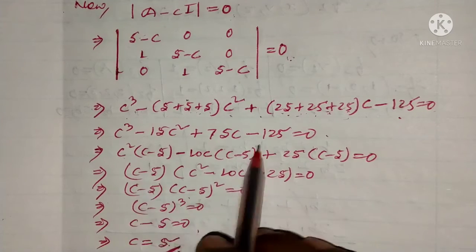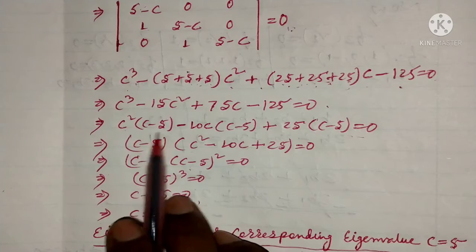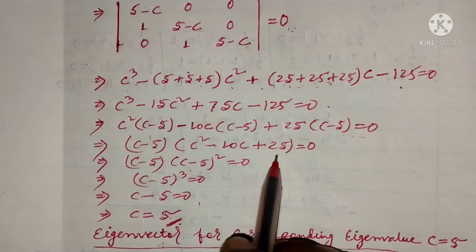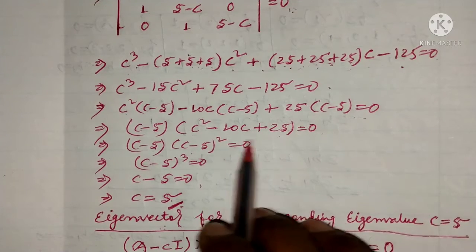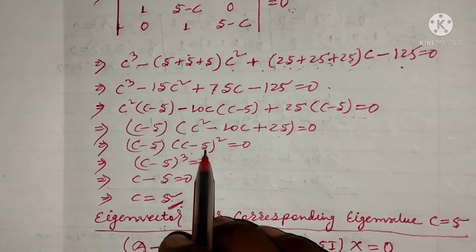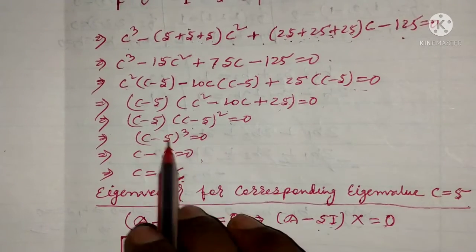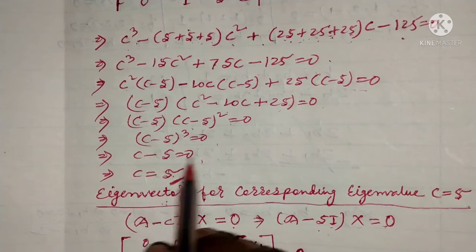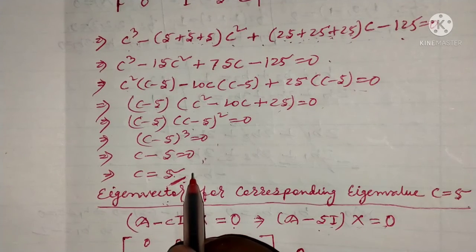So c minus 5 is a factor. If we factor out c minus 5, we can write this as (c - 5) times (c squared minus 10c plus 25) equals zero. Now this is in the form a squared minus 2ab plus b squared, which is (a - b) squared. So (c - 5) squared equals zero, which means c minus 5 equals zero, therefore c equals 5.